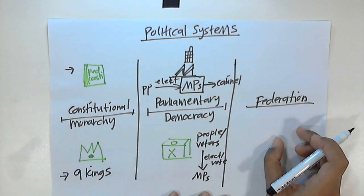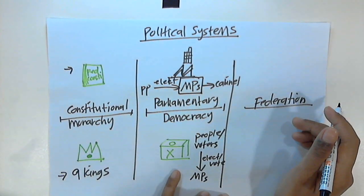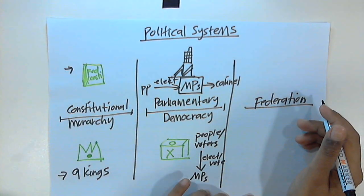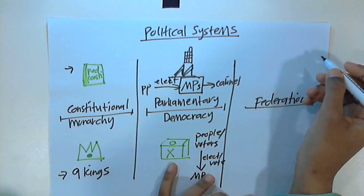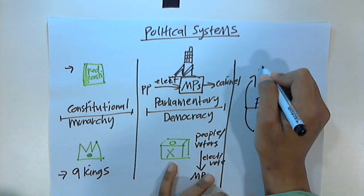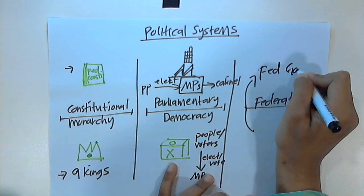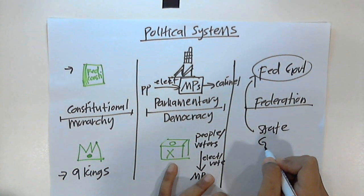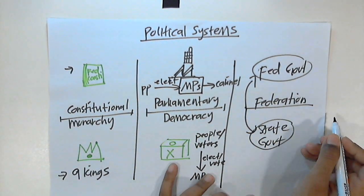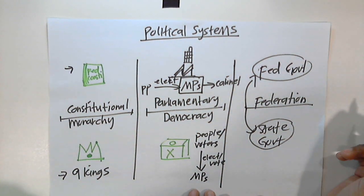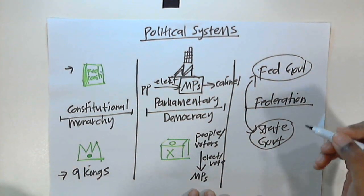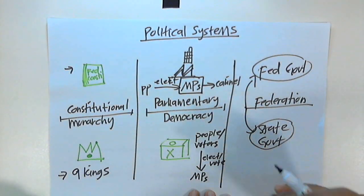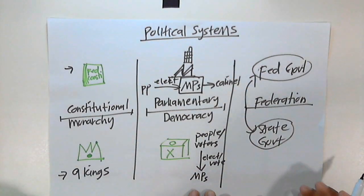Federation is a system of government where the constitution clearly divides the power between the federal government and the state government. The constitution clearly specifies what are the jurisdictions that fall under the federal government and what are the jurisdictions that fall under the state government.